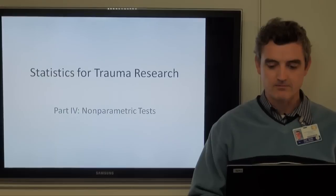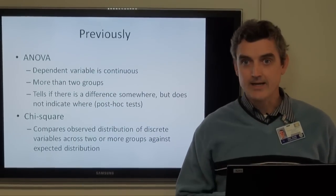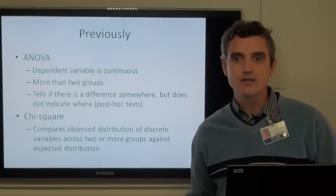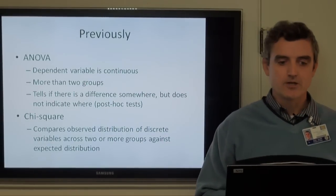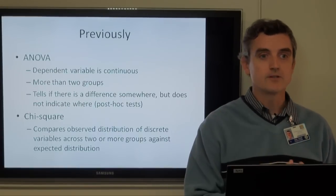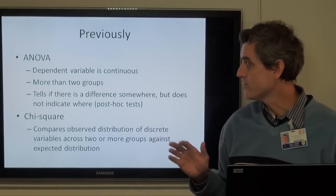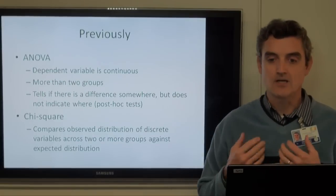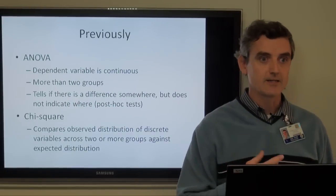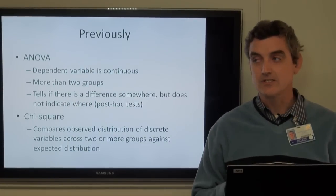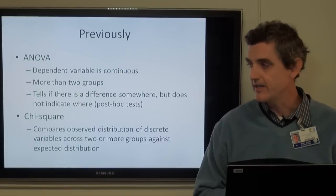We've already talked about most of what we call the univariate statistical tests, where we can look at the relationship between one independent variable and a dependent or outcome variable. Last time we talked about analysis of variance — that's where you have more than two groups that you want to compare on some continuous outcome. Remember that ANOVA tells you that there's a difference somewhere, but it doesn't say where. That's where those post hoc tests come in, so you'll have to go back and do some kind of t-test or z-test after the fact to see where the differences lie.